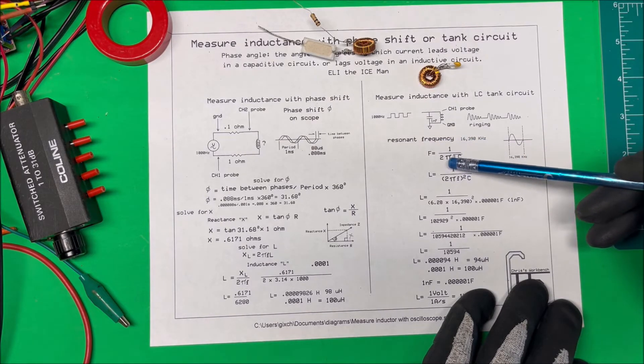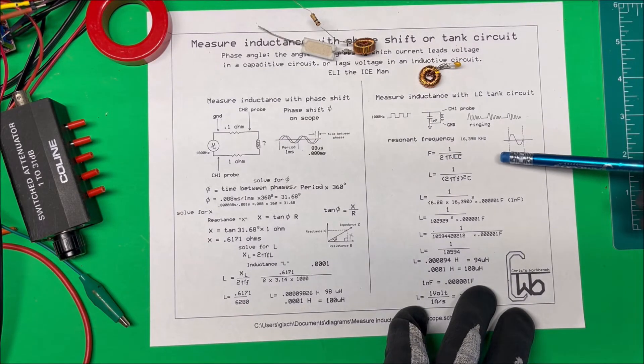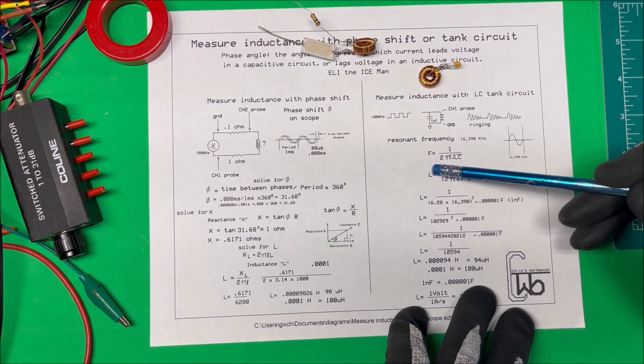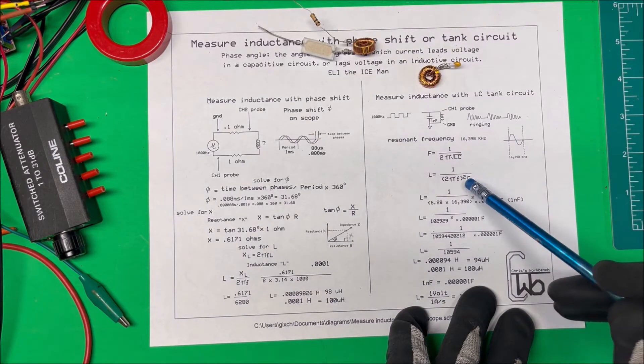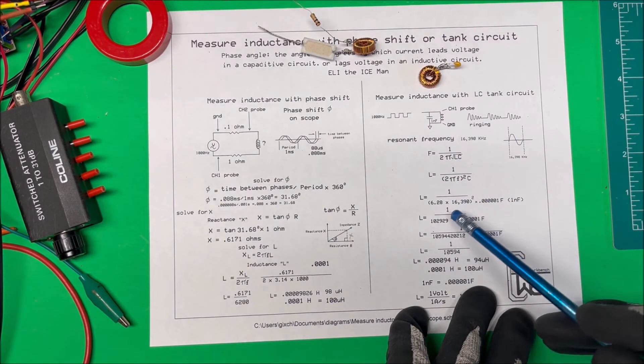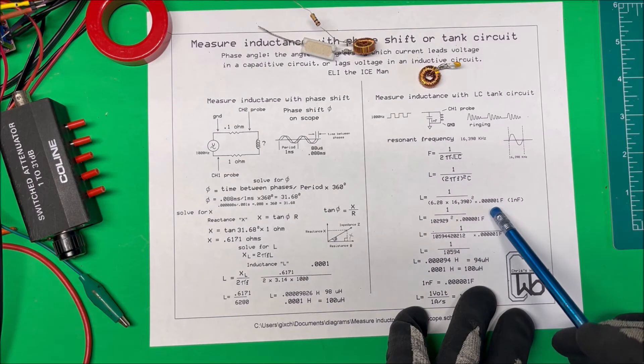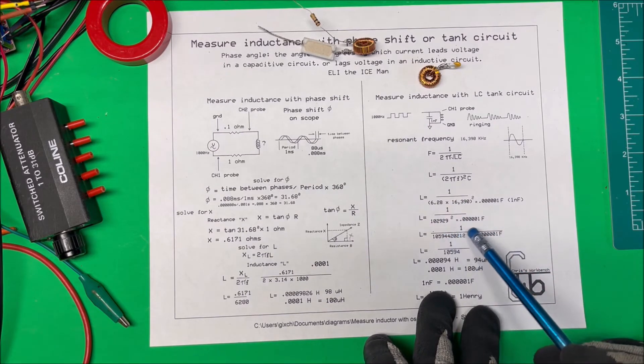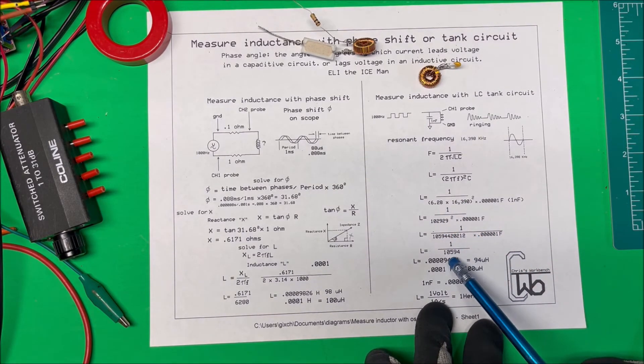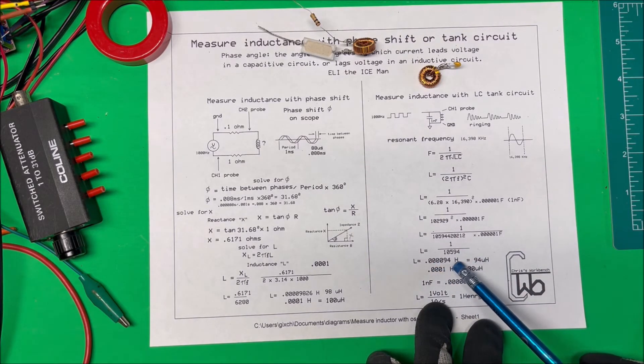We know the frequency is 16.93 kilohertz. F equals one over 2 pi times the square root of inductance times capacitance. We try to get L out of there, so L equals one over 2 pi frequency squared times the capacitance. We know the capacitance and frequency, so 2 pi which is 6.28 times our frequency squared times the one nanofarad capacitor. We do all the math and it comes out to 10,594. Divide that into one and it comes out to 0.00094 henrys or 94 microhenrys.